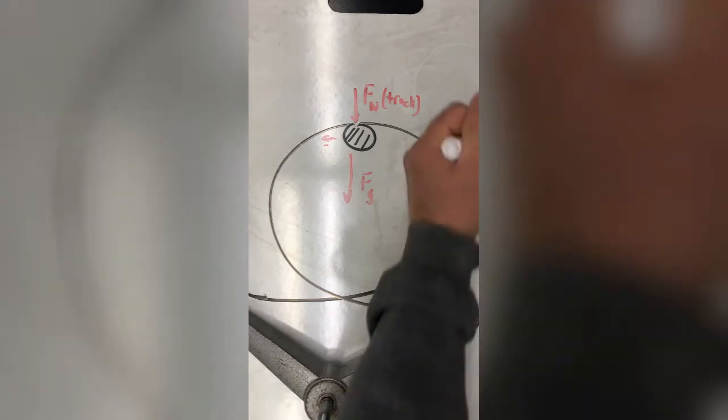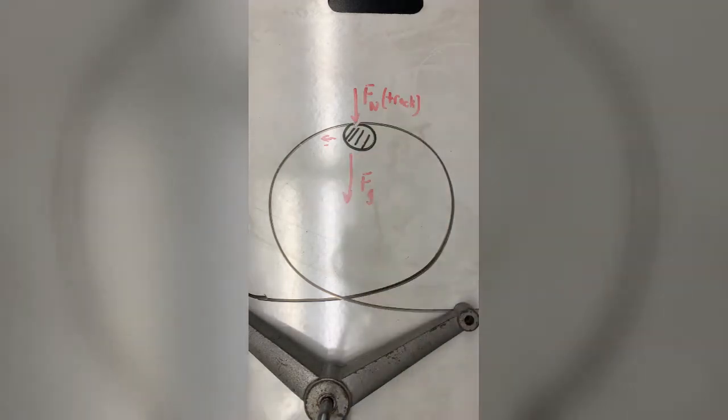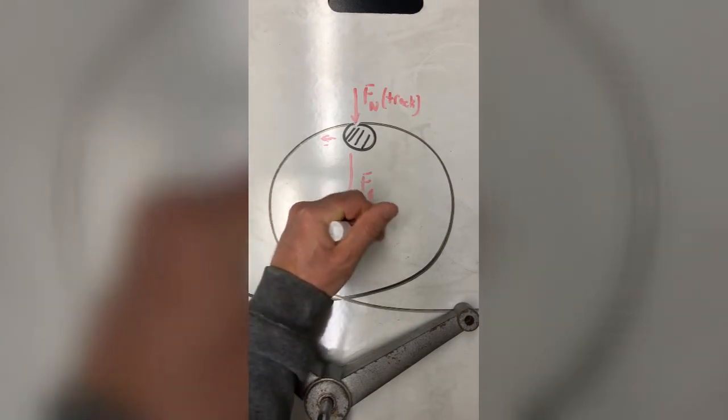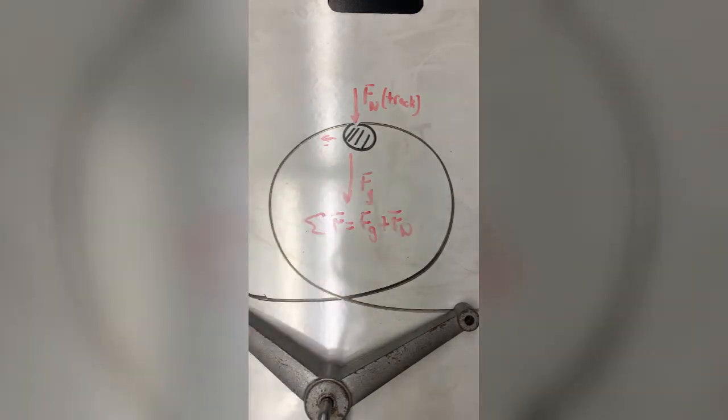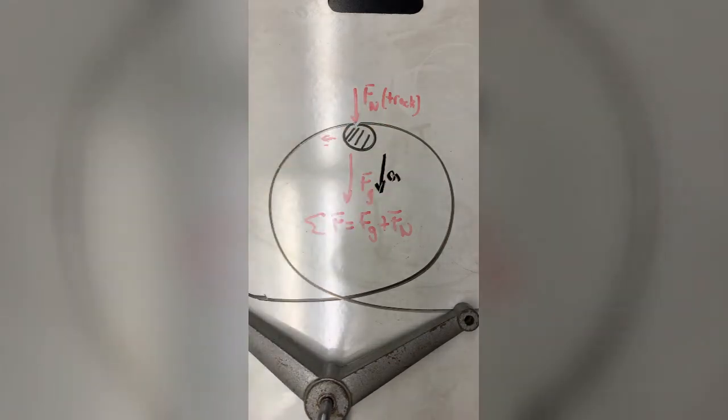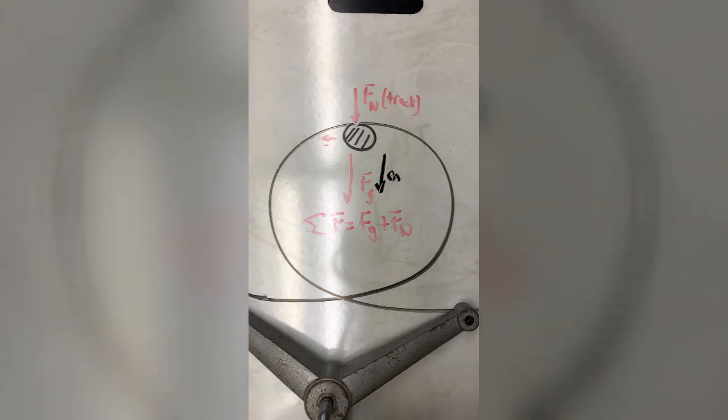Sigma F is FG plus FN, that's definitely not zero, in fact it's down. So our only conclusion is that when you ask why doesn't it fall, well that's the wrong question. It is falling. In fact it's accelerating downward with an acceleration greater than g because the net force is greater than F of g.